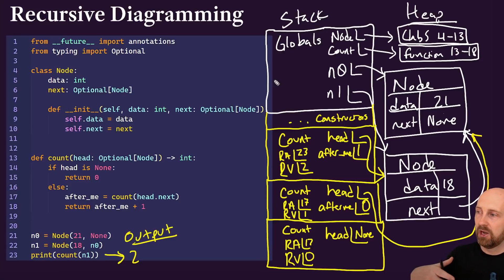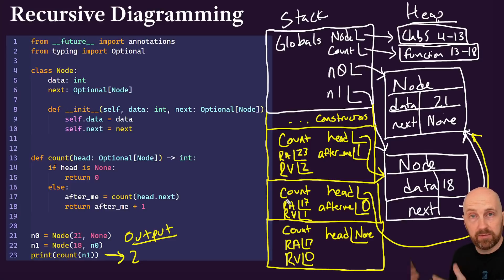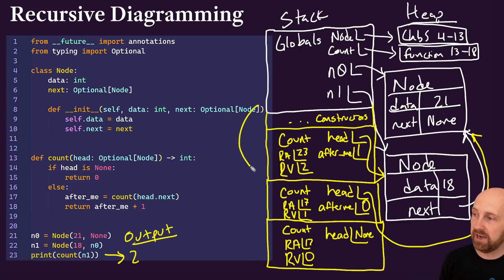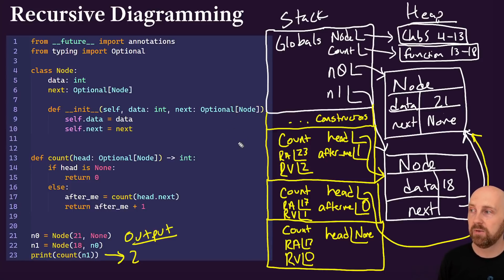Notice we began the call to count with a reference to our head node whose data was 18, then it led to a recursive call to the next node, which led to a recursive call to the tail (none — the end of our list). Then those recursive function calls returned values back up. So we were in globals, called count, called count, called count (recursively), then returned a value, returned a value, and finally returned a final value back to where the function call began in the globals frame.